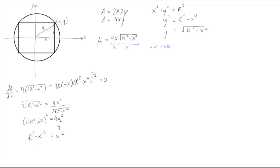Simplifying further, r squared equals 2x squared, so x squared equals r squared over 2, which means x equals r over the square root of 2.